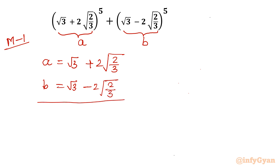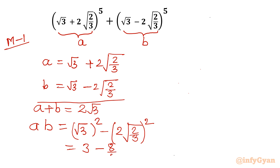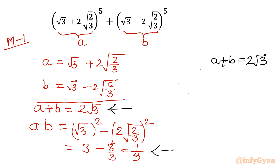Let's add both: a + b = 2√3. Now let's take the product. a times b equals (a+b)(a−b), which gives us a² − b². So √3 squared is 3, minus (2√2/3) squared which is 8/3, giving 1/3. So a + b = 2√3 and a·b = 1/3.